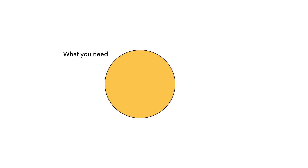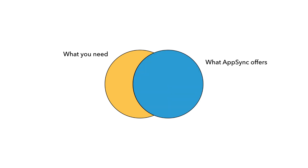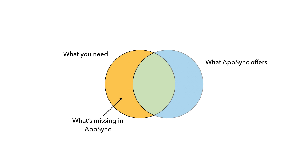Well, sometimes you need GraphQL features that just aren't supported by AppSync, even though it might offer lots of extra benefits like caching and those direct integrations with other database services. So even though AppSync probably supports most of what you need, you have to either make do without the GraphQL features that you want but are missing in AppSync, or you have to implement them yourself.